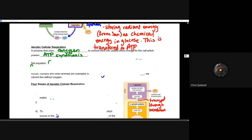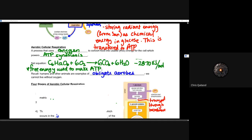Aerobic cellular respiration is the process that uses oxygen to convert food into stable and usable free energy — energy the cell can power itself with — via ATP synthesis, meaning the creation of ATP. The net chemical equation you need to know is: C₆H₁₂O₆ plus oxygen yields six carbon dioxide molecules and six water molecules, as well as free energy. That negative delta G means we have usable free energy to make ATP.